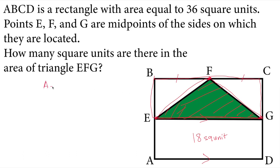The area formula of a triangle is one half times base times height. This one half comes from the fact that the triangle is half the area of the rectangle. So this question teaches us and proves this rule.